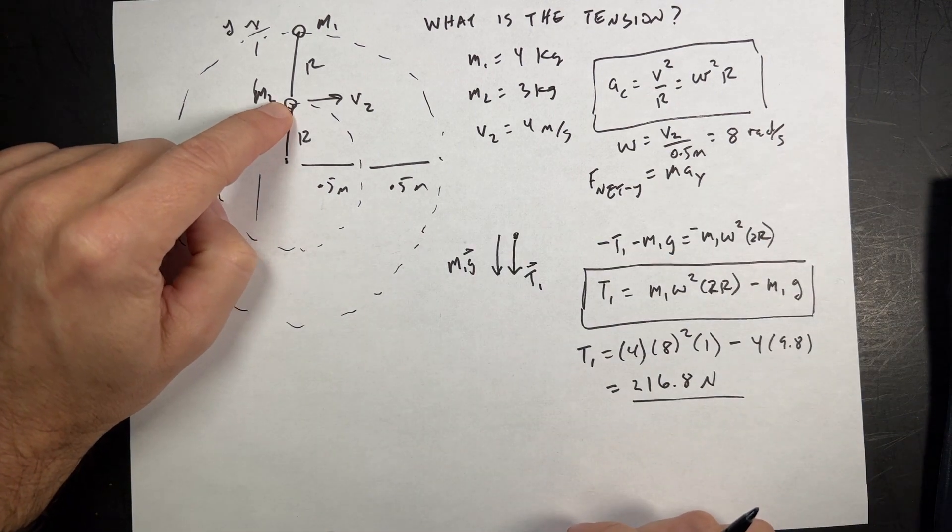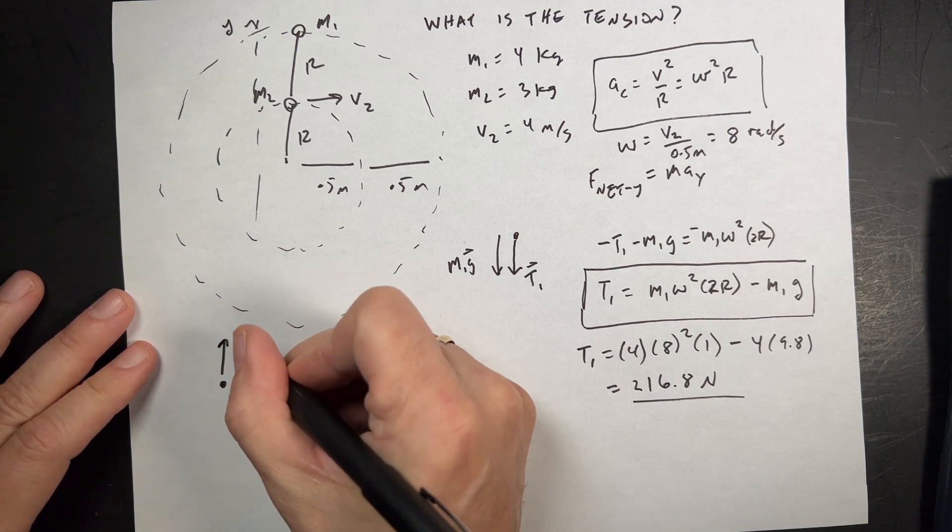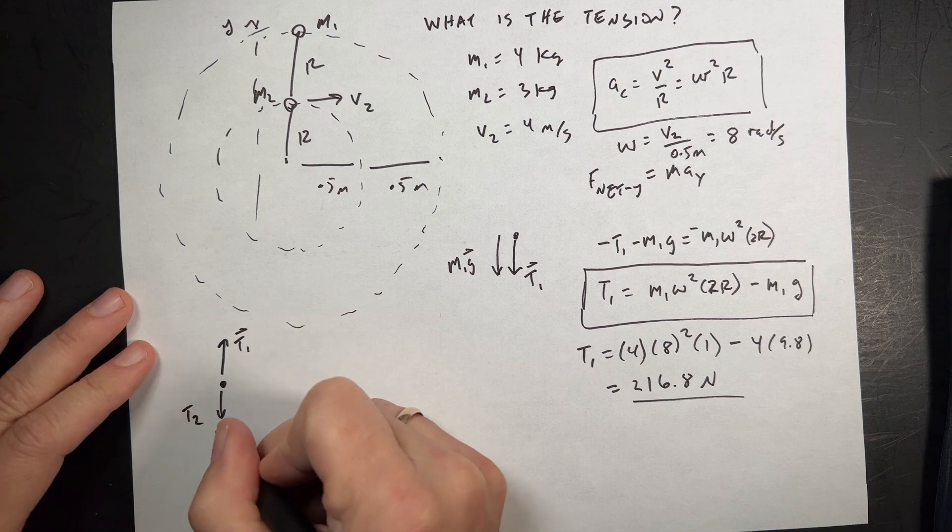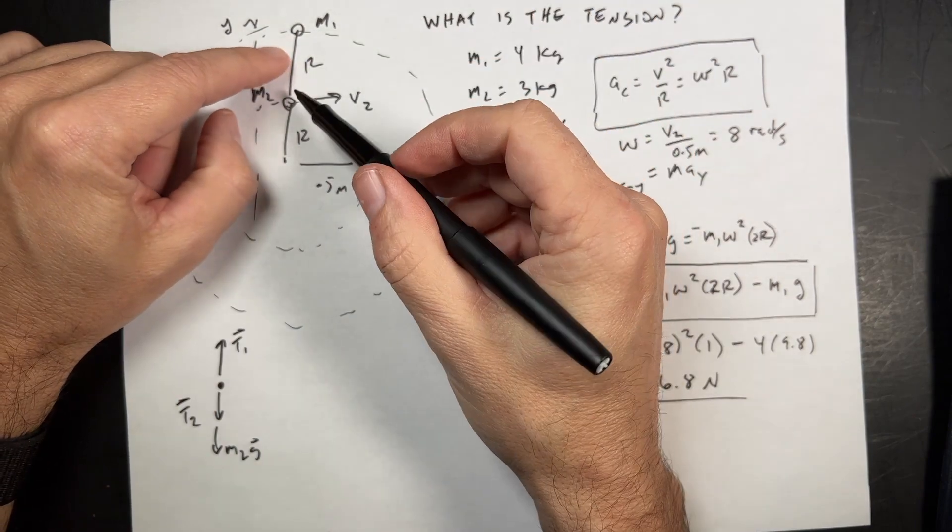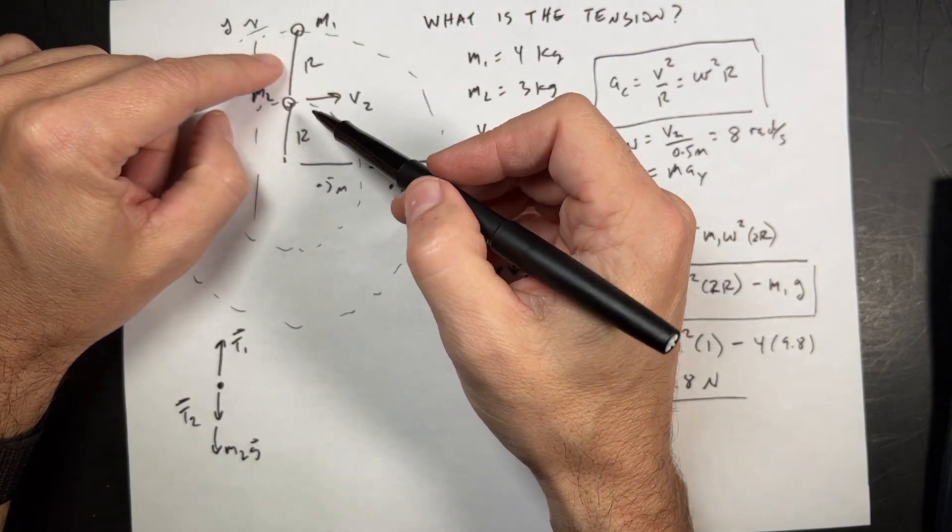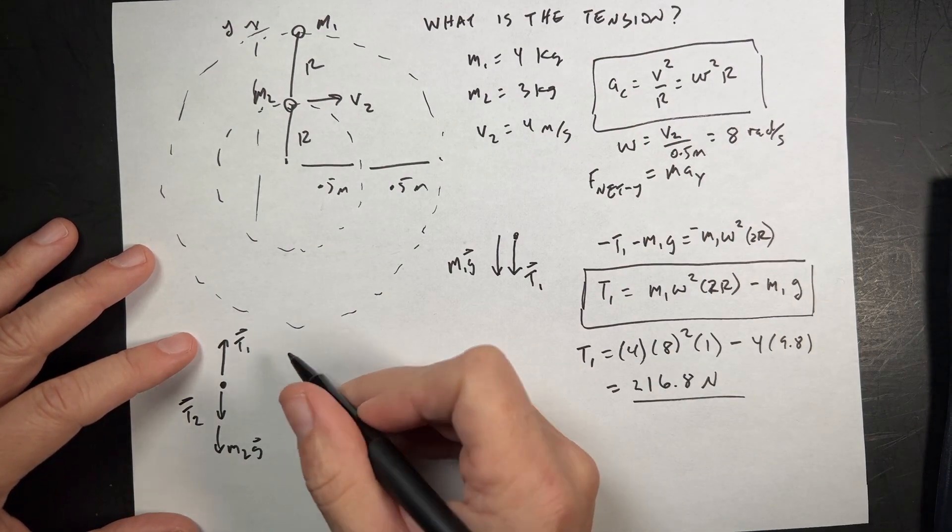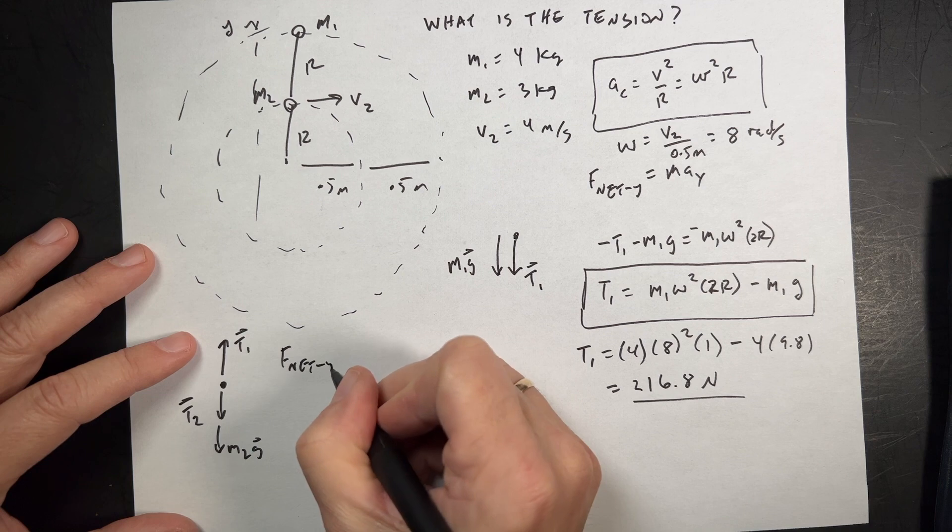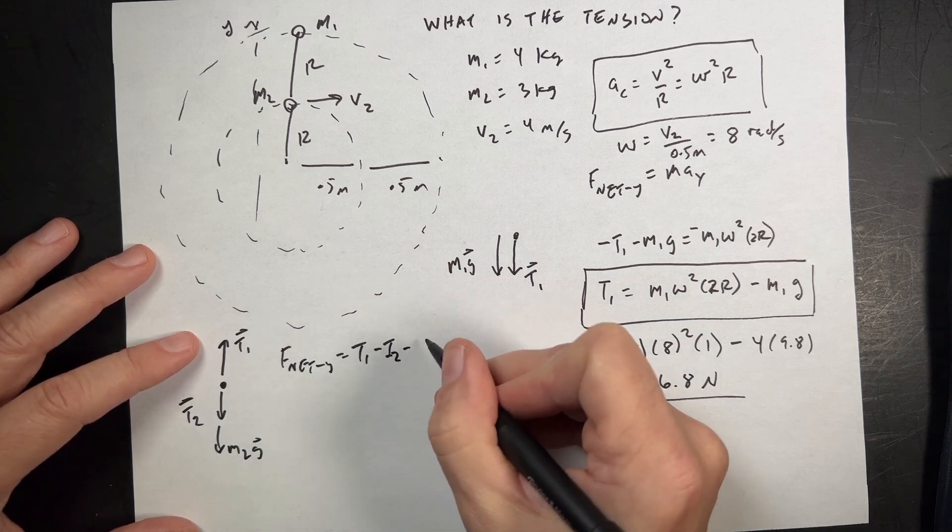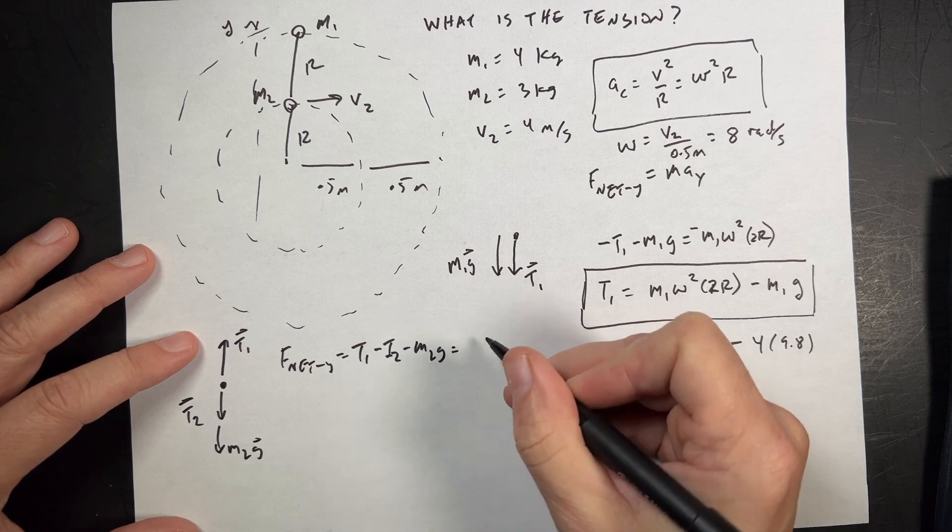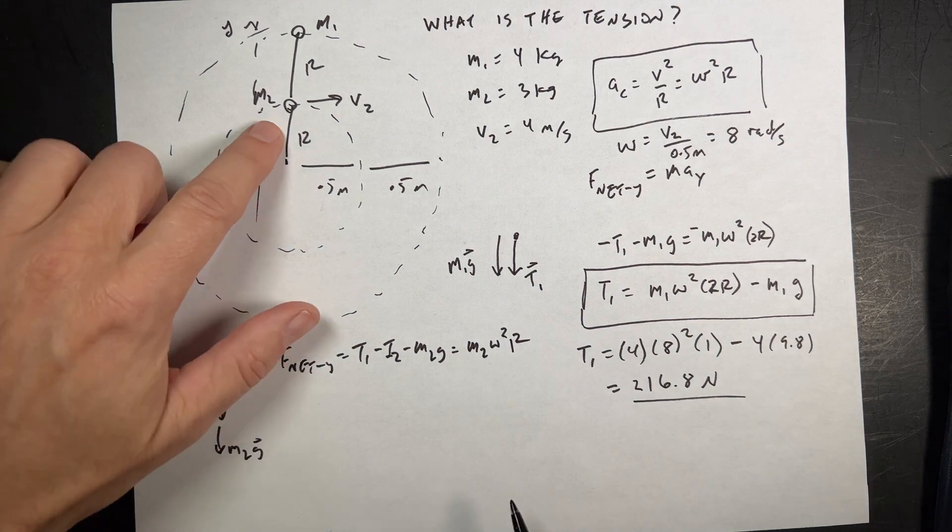Now, what about this mass right here? Let's draw a force diagram for that. Here I have the T1 pulling up, and then T2, and M2G pulling down. Remember that if this string pulls down on mass 1, it has to pull up on mass 2 with the same value. So I can write the F net Y is going to be T1 minus T2, minus M2G, and that's going to be equal to M2 omega squared times R. It only has the radius of R.